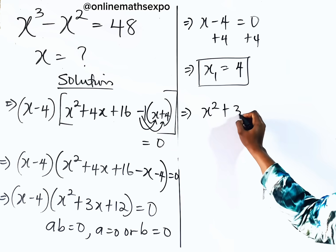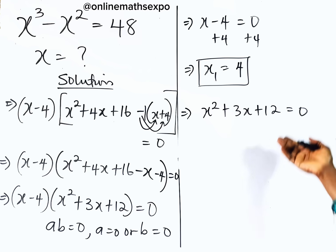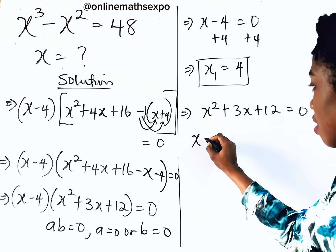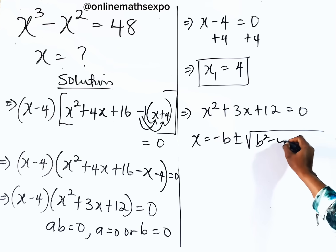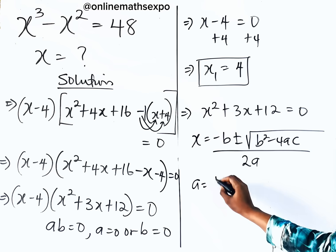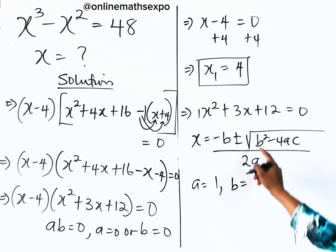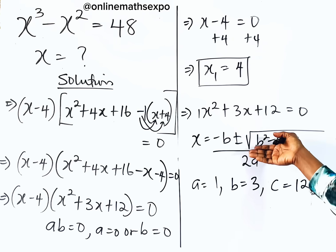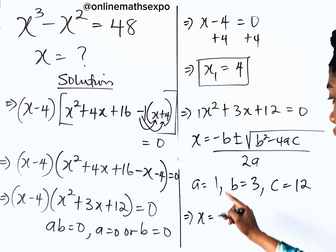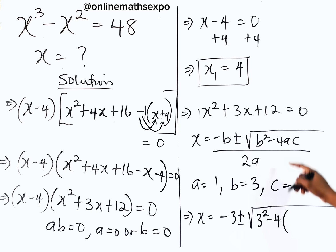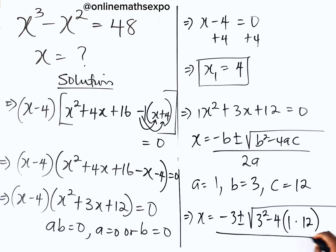Now we're going to solve the second factor. We have x squared plus 3x plus 12 is equal to 0. This is a quadratic because the highest power of x is 2. We are going to use the quadratic formula: x equals negative b plus or minus square root of b squared minus 4ac, divided by 2a. Remember your a is the coefficient of x squared, which is 1; your b is the coefficient of x, which is 3; and your c is the constant term, which is 12. So plug these values into the formula: x equals negative 3 plus or minus square root of 3 squared minus 4 times 1 times 12, all divided by 2 times 1.